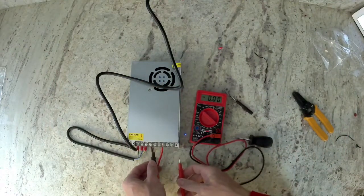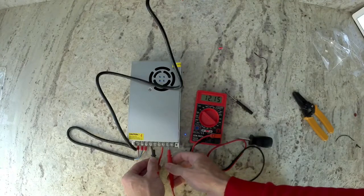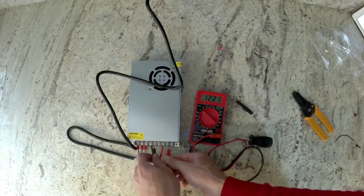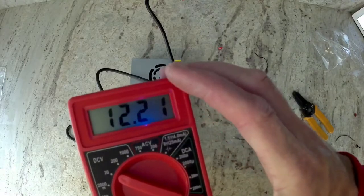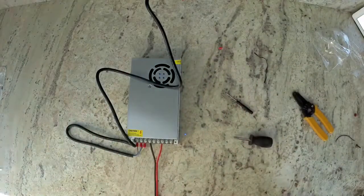Put the black lead on a V minus, the red lead on a V plus, and right now I'm getting 12.2 volts, which is right where we want it to be for our power supply.